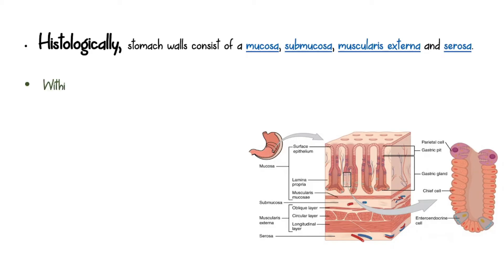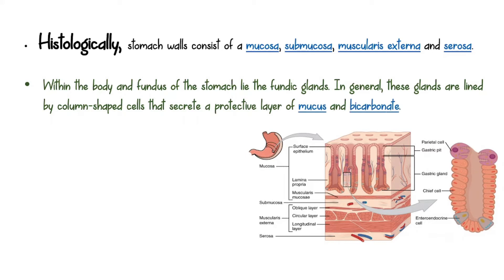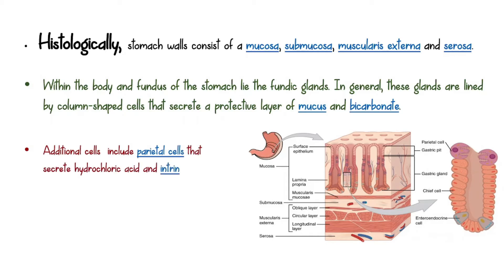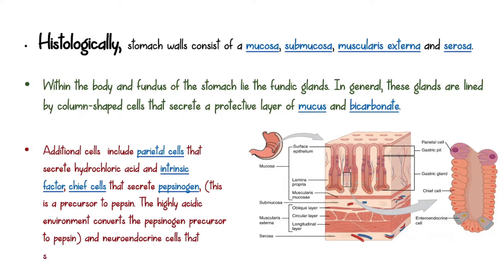Within the body and fundus of the stomach lie the fundic glands. In general, these glands are lined by column-shaped cells that secrete a protective layer of mucus and bicarbonate. Additional cells include parietal cells that secrete hydrochloric acid and intrinsic factor — this is a precursor to pepsin. The highly acidic environment converts the pepsinogen precursor to pepsin, and neuroendocrine cells that secrete serotonin.